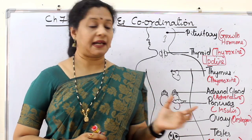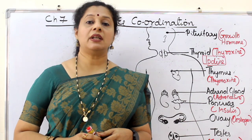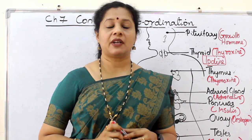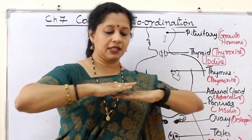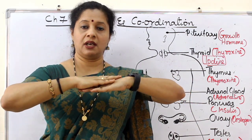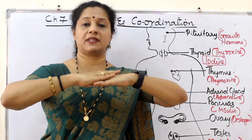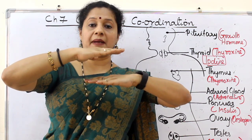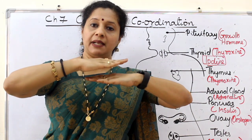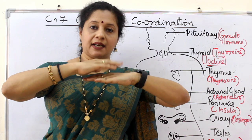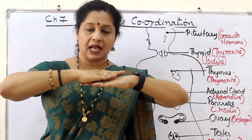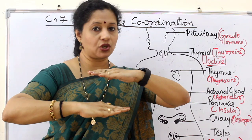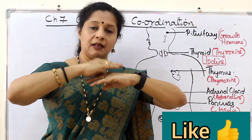Now, the main pancreatic hormone is insulin. Insulin regulates the blood sugar level — specifically, it brings down the blood glucose level. For example, if you eat a lot of chocolates, ice creams, and pastries, blood sugar level will rise. The pancreas then secretes insulin, which converts glucose into glycogen to bring the sugar level back to normal. If it continuously secretes, the sugar level would go too low — which is also not good. So once it reaches the normal level, secretion stops.